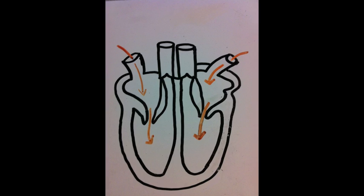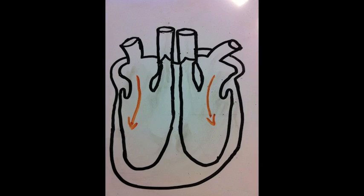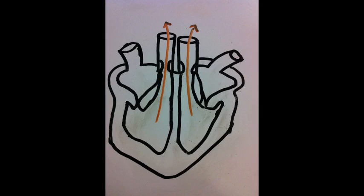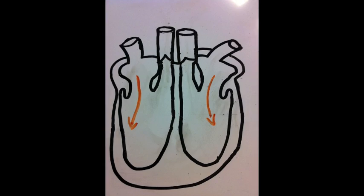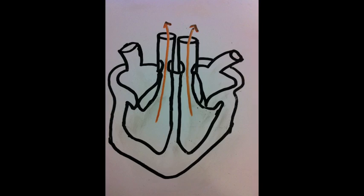Contraction of the ventricles is the final stage. The valves will close, preventing the backflow of blood. Semilunar valves push blood through the aorta and the pulmonary arteries.